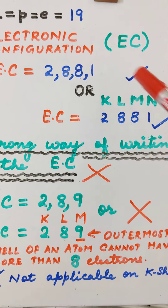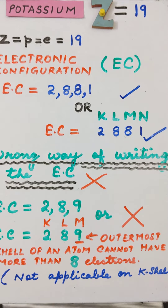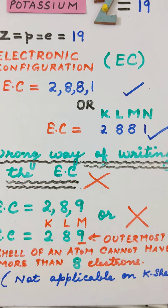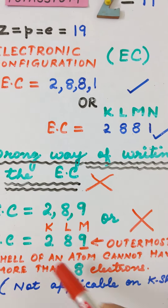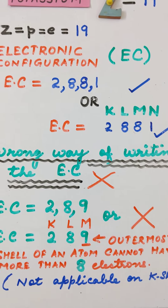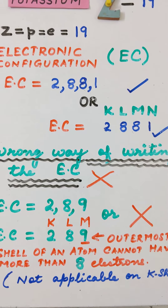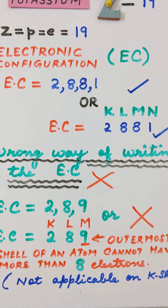These are the only two ways of writing the correct electronic configuration for potassium. Now let us try to understand this concept and why the wrong way is incorrect, with the help of an orbital structure diagram.